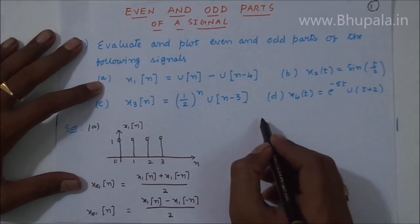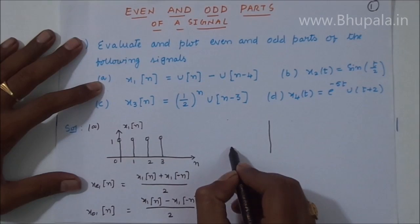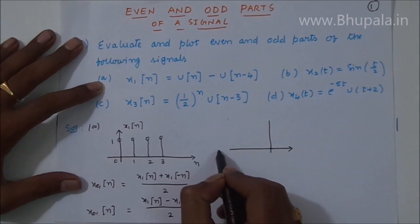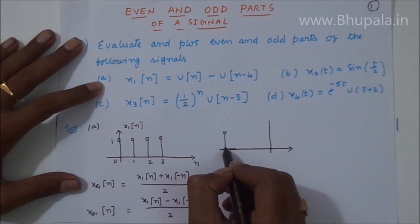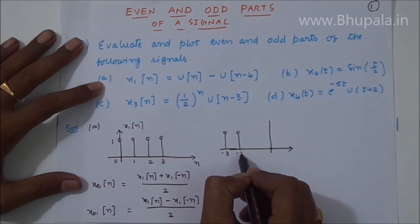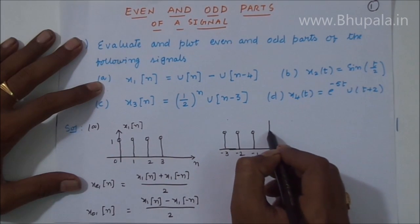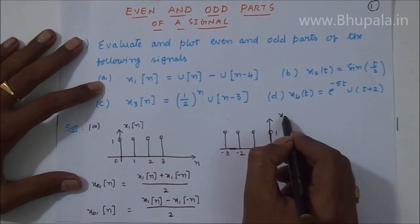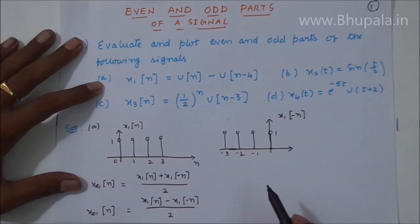x1[-n] is nothing but the flipped version of signal x1[n]. It will start at minus 3, then minus 2, then minus 1, and then 0. So this is the time-reversed version of the original signal.